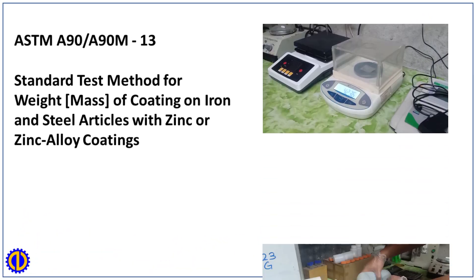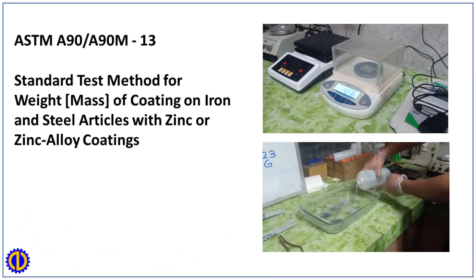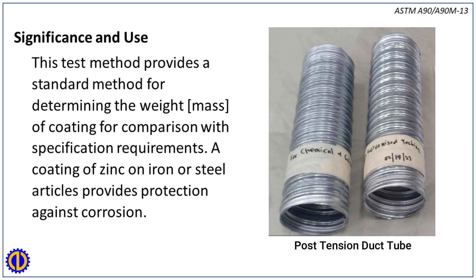ASTM A90/A90M-13 standard test method for weight of coating on iron and steel articles with zinc or zinc alloy coatings. Significance and use: this test method provides a standard method for determining the weight of coating for comparison with specification requirements.